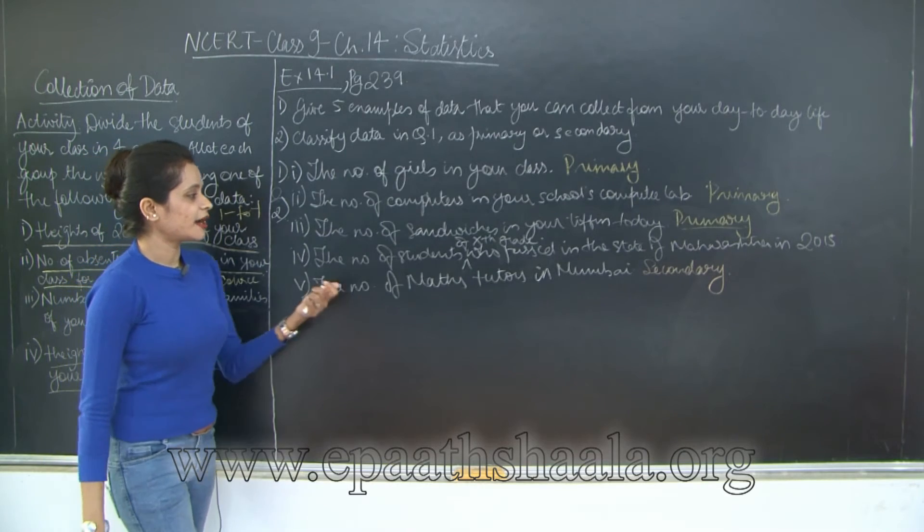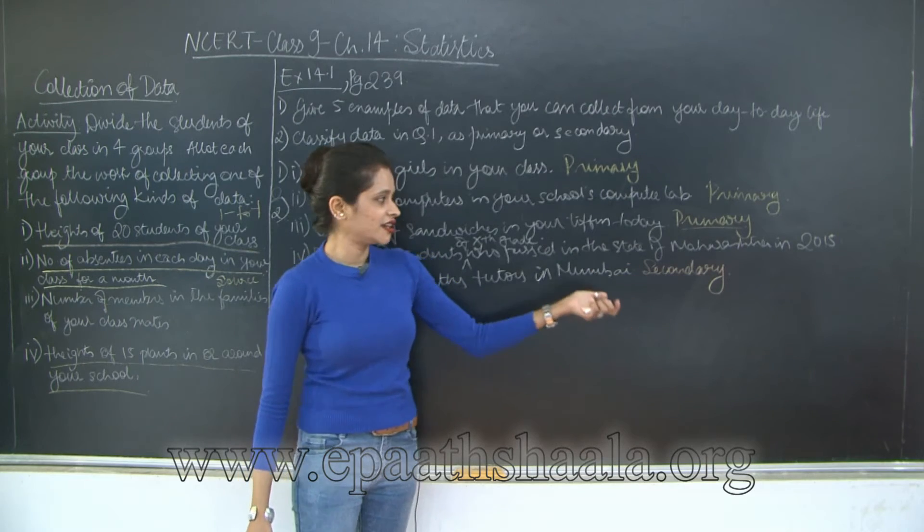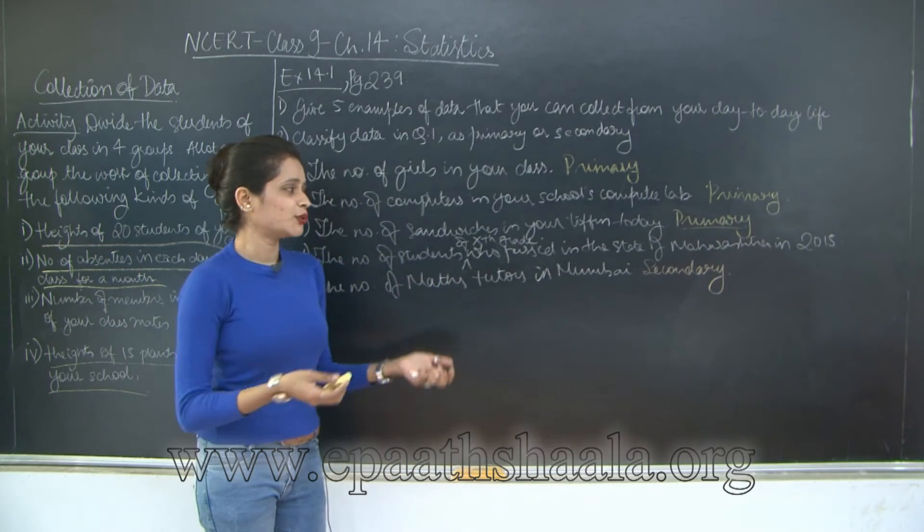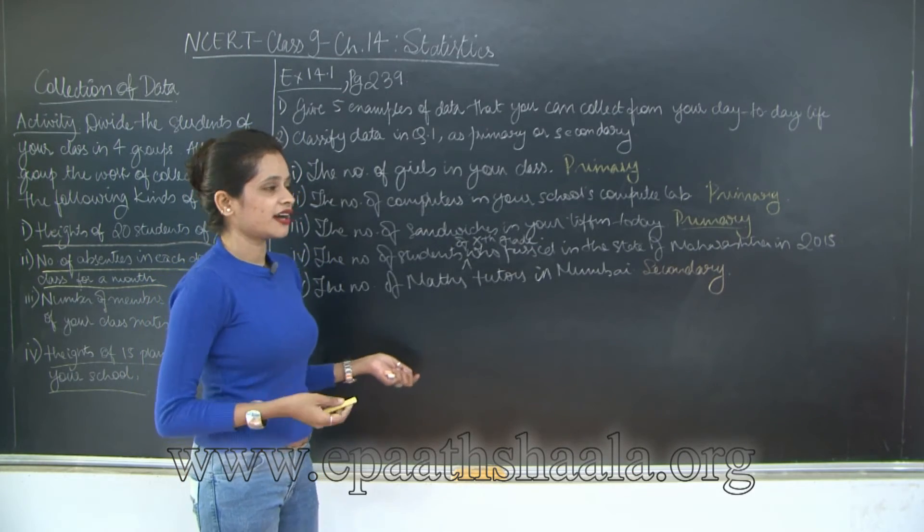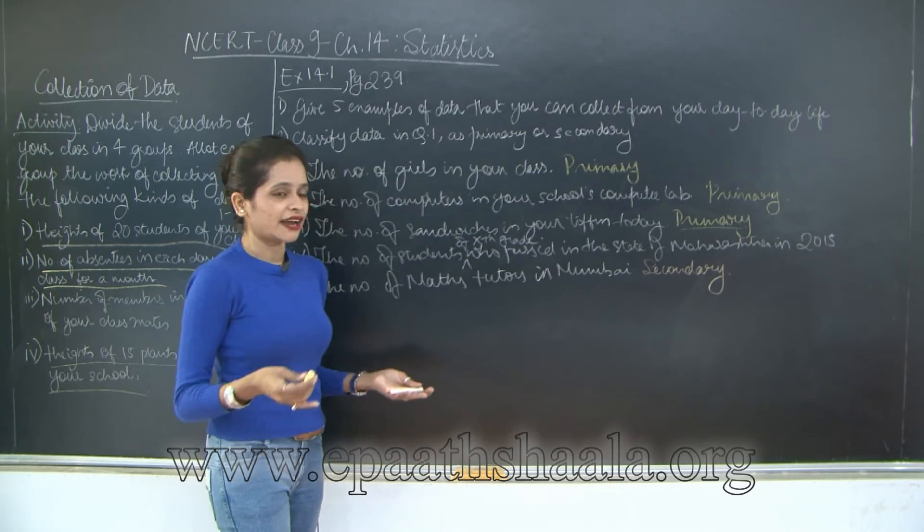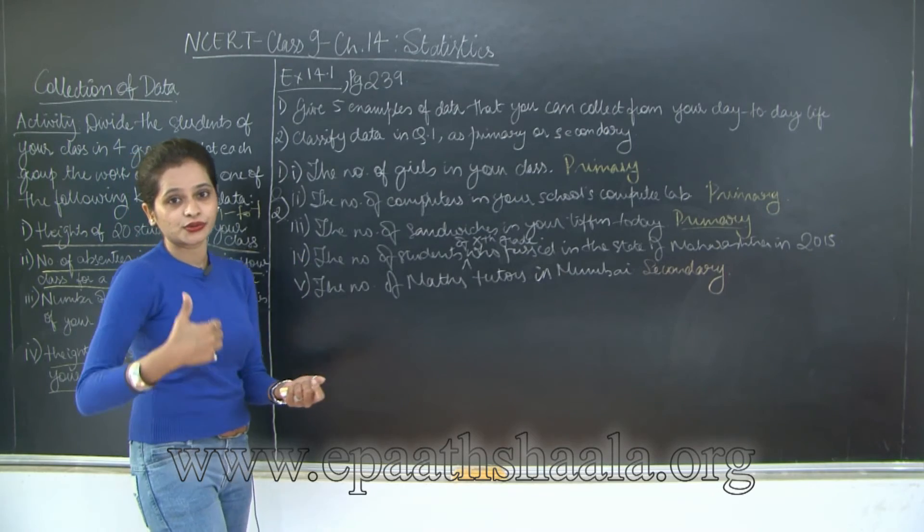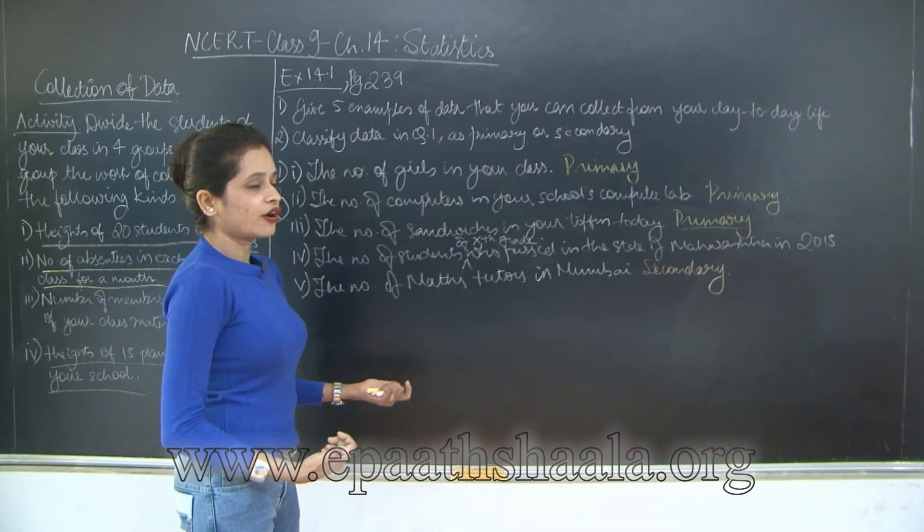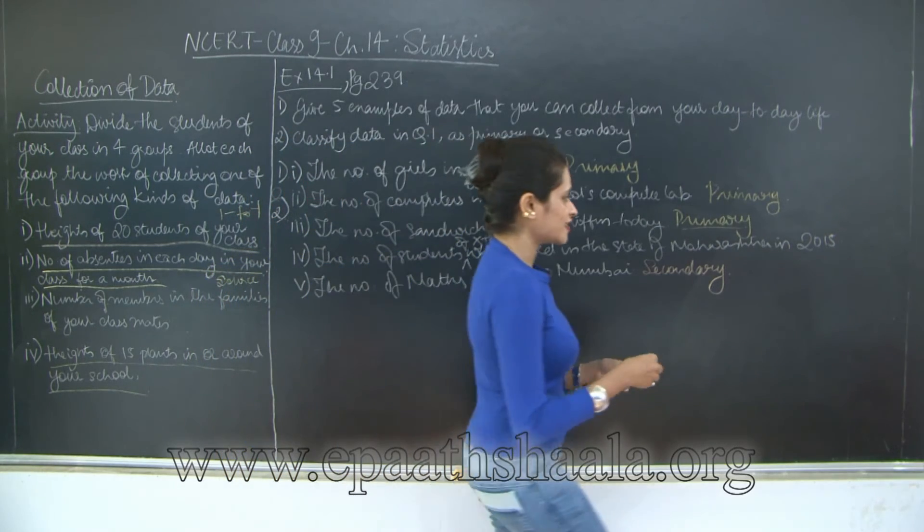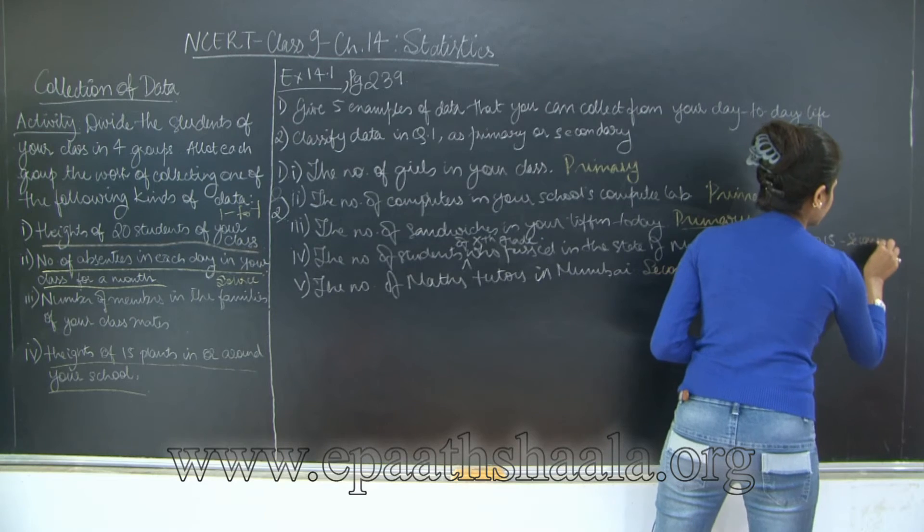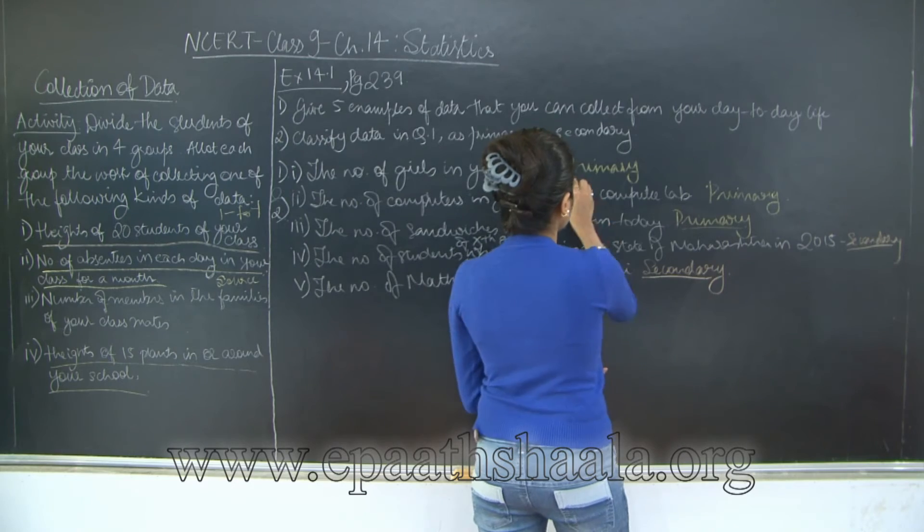Now there is another one remaining: the number of students of 10th grade who passed in the state of Maharashtra in 2015. Is it possible for you to count? You can obviously say about the number of students in your school or in your class, but for the state of Maharashtra, it is a huge state. Have you seen it on the map? It is very difficult to find the number of students. So you are going to get this information either through the previous year's newspaper or through the internet. So this is again collected through source, so it is going to be secondary. So secondary, secondary, and 3 primary.